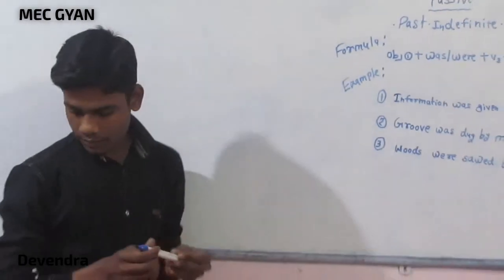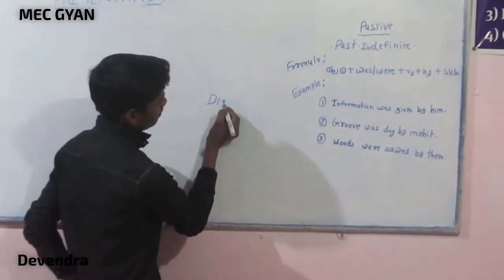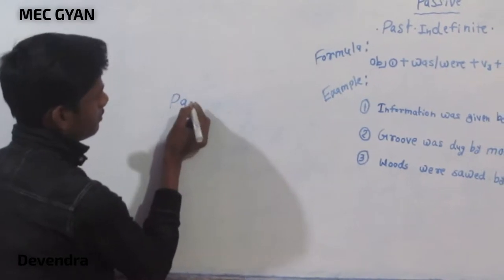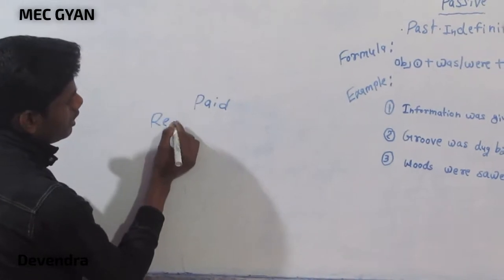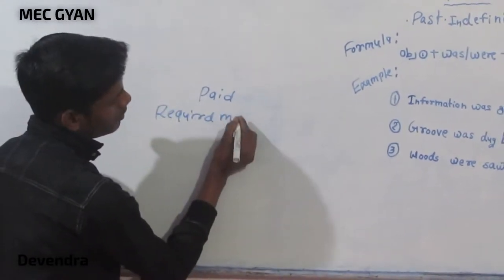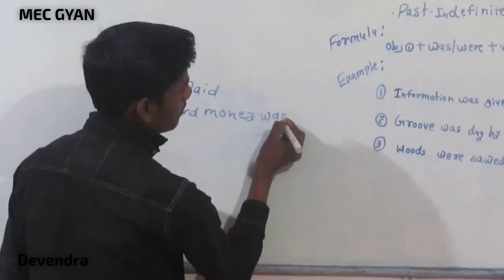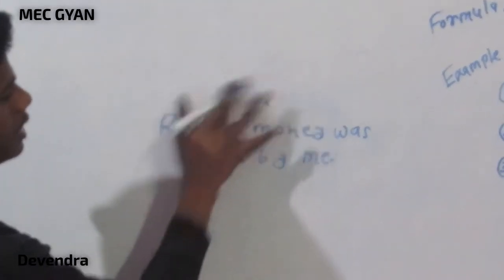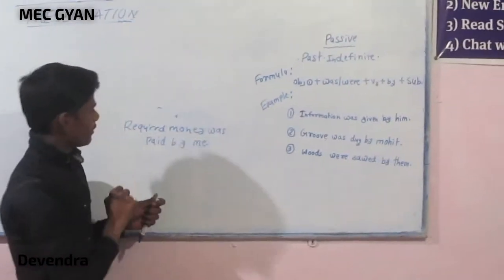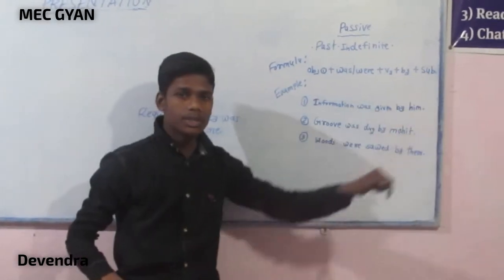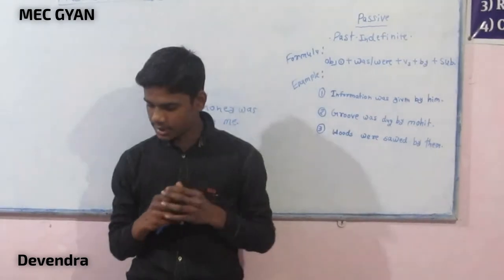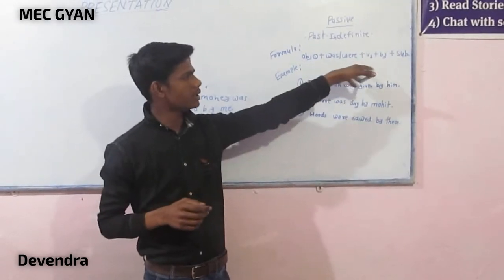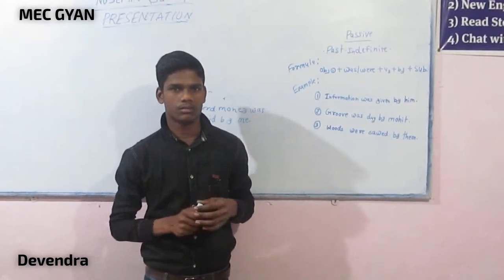Have you understood? Here are some more examples. Required money was paid by me. I am asking you a question: the group was saved by him — so, saved by him.